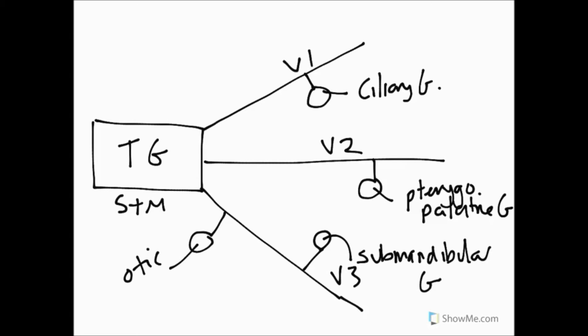And now we've got our four cranial nerves with a parasympathetic function. And these are cranial nerves three, which is oculomotor, seven, which is facial, nine, which is glossopharyngeal, and ten, which is vagus. So these are the cranial nerves with parasympathetic function.